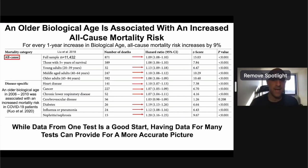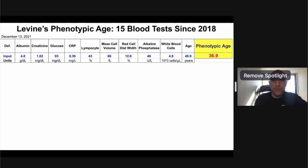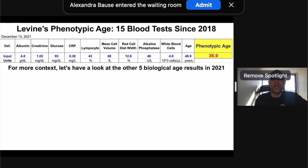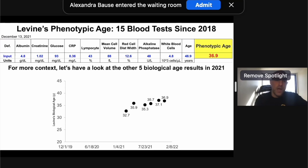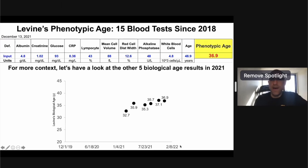While one test is a good start, having data from many tests provides a more accurate picture. I've had 15 blood tests since 2018 using Levine's test. Looking at all six biological age results in 2021, starting from 36.9 on the last test — it wasn't much different from test five, but not as good as test one at 32.7. Taking the average of those six tests in 2021, my average biological age was 35.6.